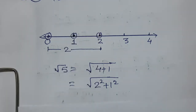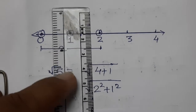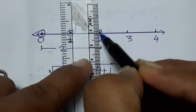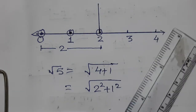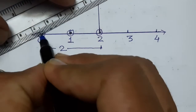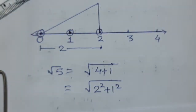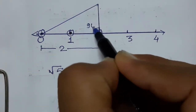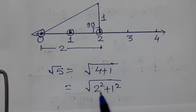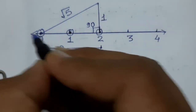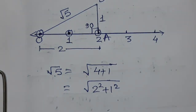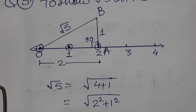Let's zoom in. We have 2 cm as 1 unit, so we make a perpendicular of 1 unit here and join it. Now at 90 degrees — this side is 2 units and the perpendicular is 1 unit. By Pythagoras: 2² + 1² = 4 + 1 = 5, so the hypotenuse is √5.